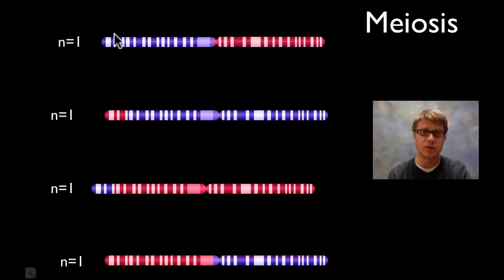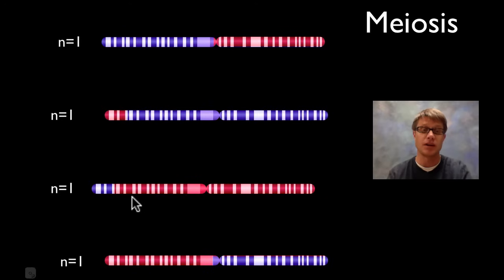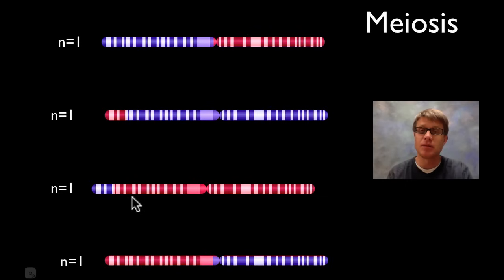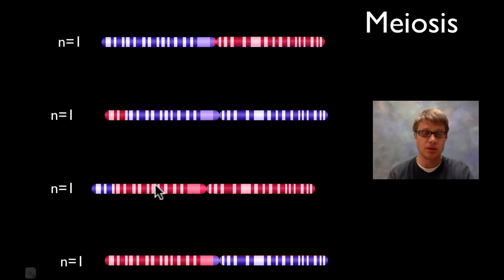In males, each of those four nuclei would form a brand new sperm. In females it's a little different. In males you make sperm from puberty to the day you die — trillions of sperm during their lifetime. But in females you've actually undergone most of this meiotic process before you're even born. Females make just a few eggs before they're born, and they lavish them with attention.